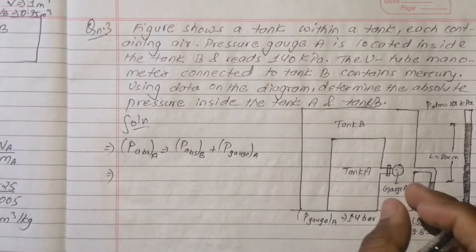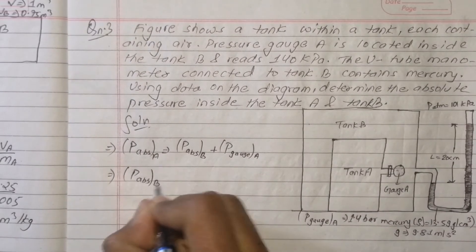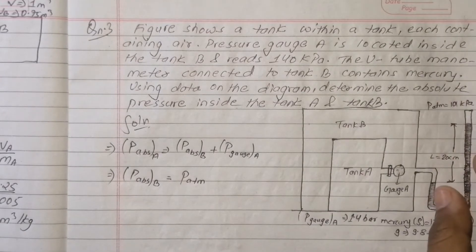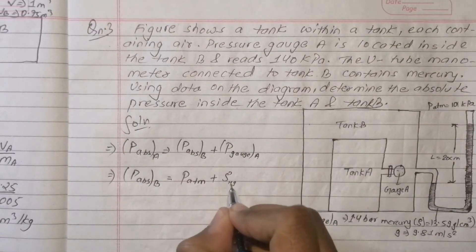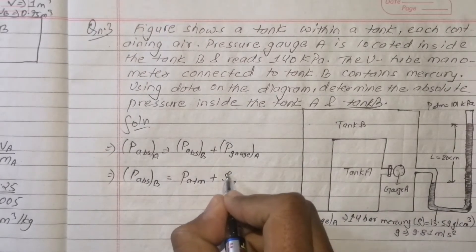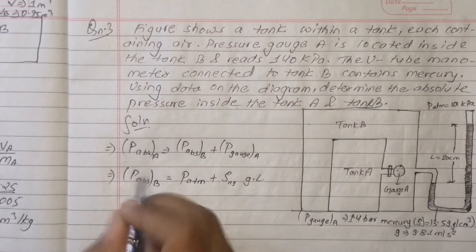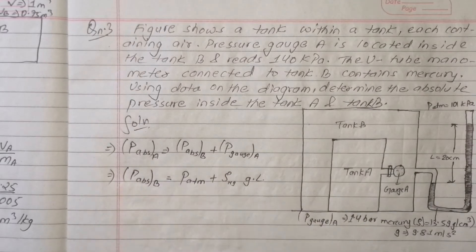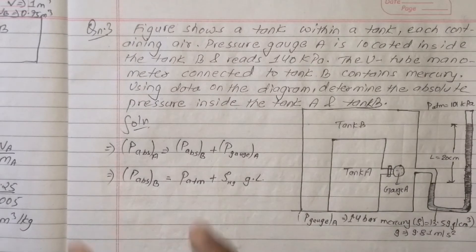P absolute of B equals atmospheric pressure plus rho times g times L — where rho is density, g is gravity, and L is distance.